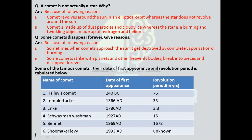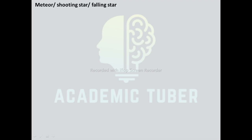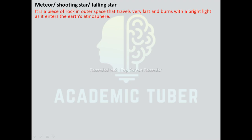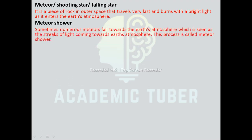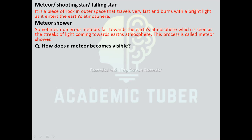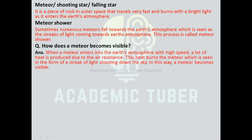Meteor — shooting star or falling star: a meteor is a piece of rock in outer space that travels very fast and burns with a bright light as it enters the Earth's atmosphere. Meteor shower: sometimes numerous meteors fall into the Earth's atmosphere, which are seen as streaks of light, and this process is called a meteor shower. How does a meteor become visible? When a meteor enters the Earth's atmosphere at high speed, a lot of heat is produced due to air resistance. This heat burns the meteor, which is seen as a streak of light shooting down in the sky.